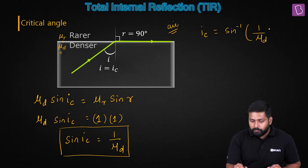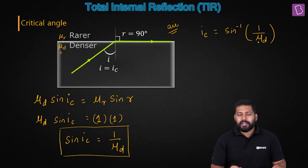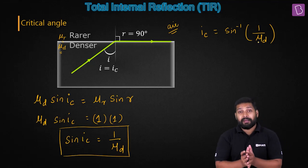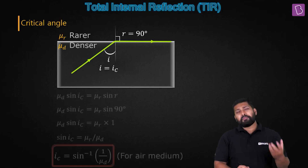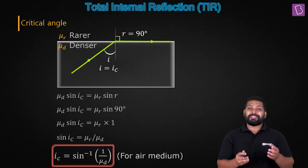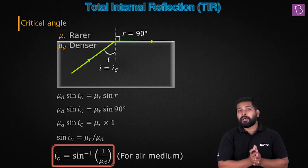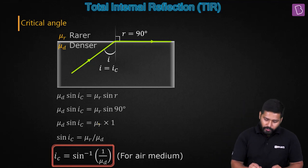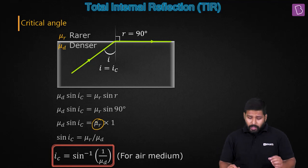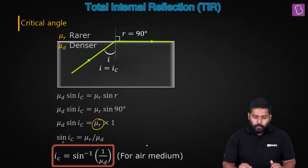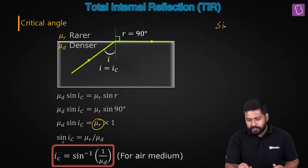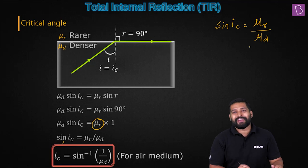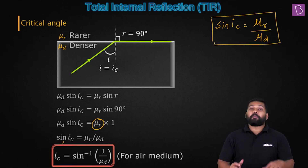So the critical angle is IC equals sine-inverse of 1 over mu-d, where mu-d is the refractive index of the denser medium. This is the case where air is taken as the rarer medium. If it is some other medium, just substitute mu-r in place of 1. The general parent formula is: sine(IC) equals mu-r divided by mu-d — the refractive index of the rarer medium divided by the refractive index of the denser medium.